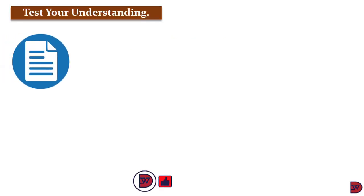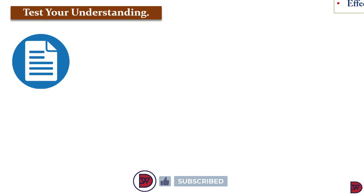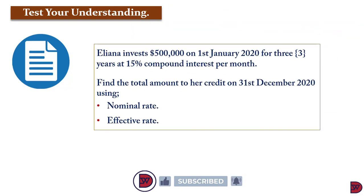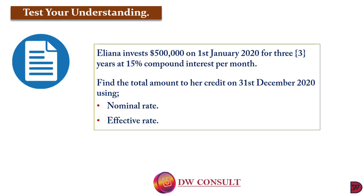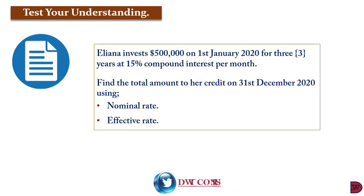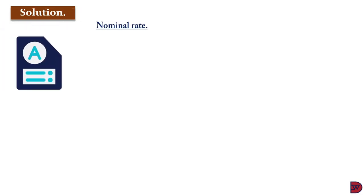Let's test our understanding further. Eliana invests $500,000 on 1st January 2020 for 3 years at 15% compound interest per month. Find the total amount to be accrued on 31st December 2020 using first the nominal rate and then the effective rate.